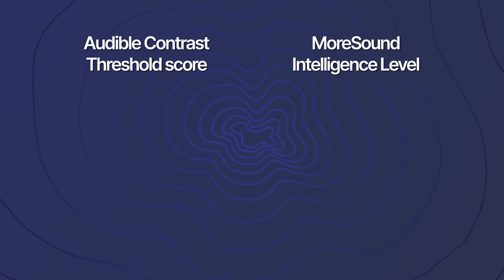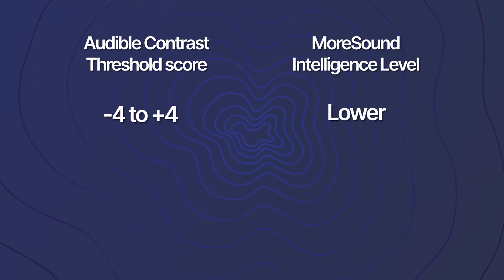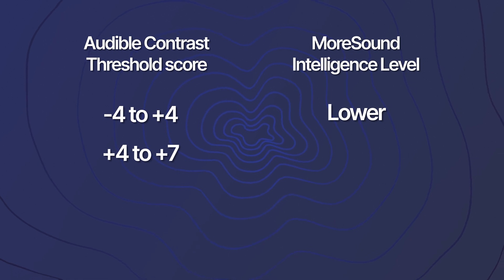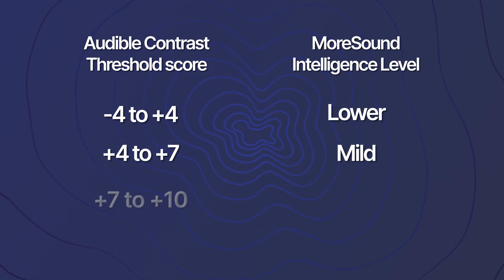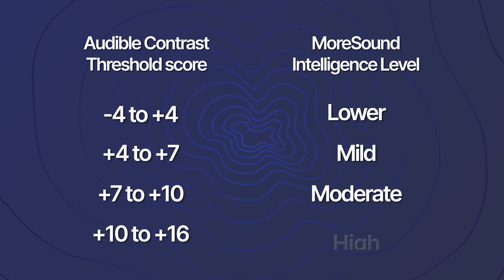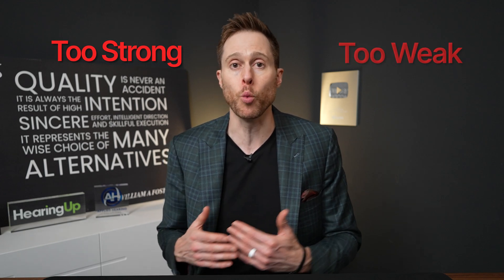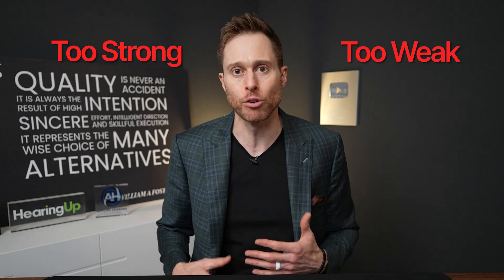For instance, if your Audible Contrast Threshold value is between negative 4 and positive 4, your MoreSound Intelligence level would be set at a lower level. If you had a value between 4 and 7, your MoreSound Intelligence level would be set to mild. Between 7 and 10, it would be set at a moderate level. And between 10 and 16, it would be set at a high level. When the NCL value is taken into account during your Oticon hearing aid programming, it can ensure that you're not setting these digital features at too strong of a level — which can take away the naturalness of sound — and ensure that you're not setting them at too weak of a level, which can make you struggle more in a background noise scenario.